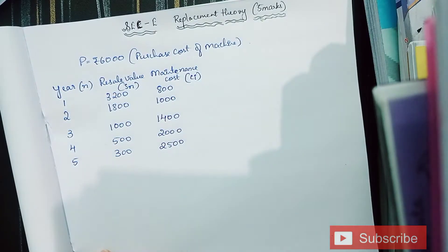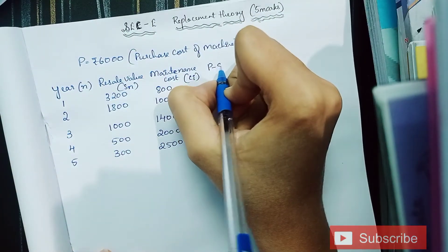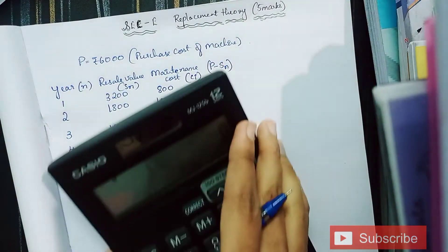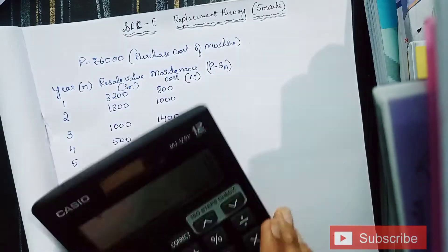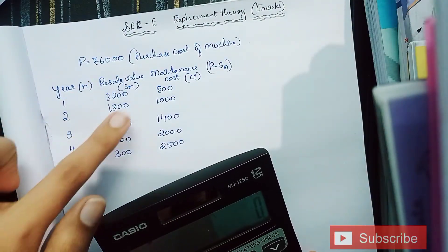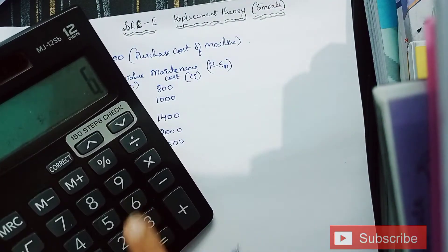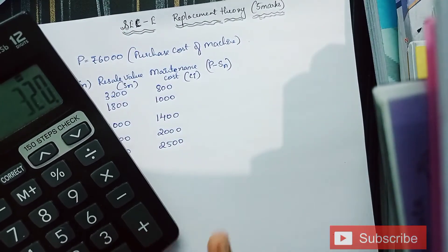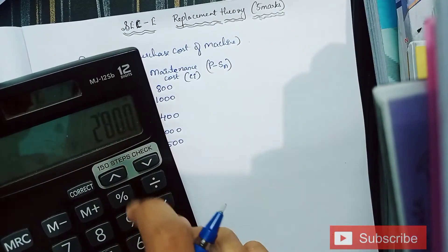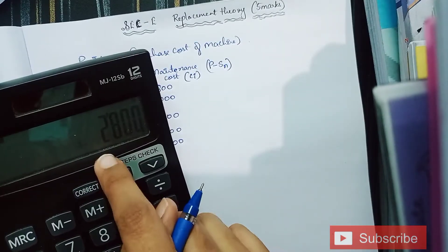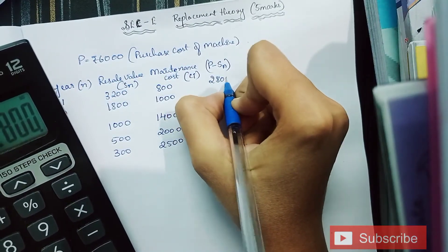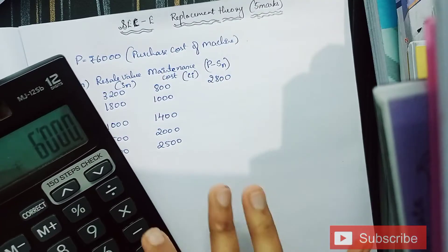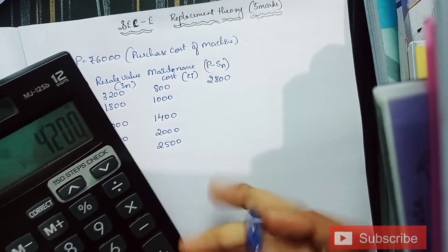Next column is P minus SN, which is nothing but purchase cost of machine minus the resale value. So 6000 minus 3200 is 2800. We're supposed to write next to the respective rows. 6000 minus 1800 is 4200.